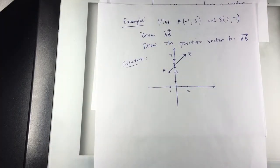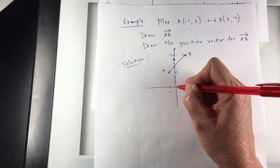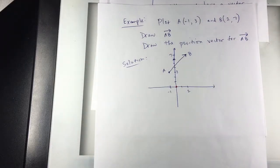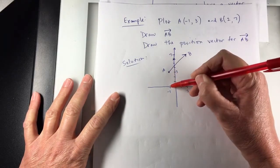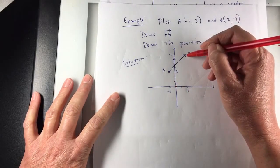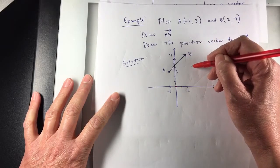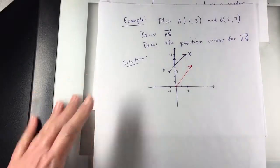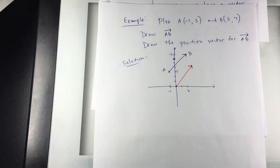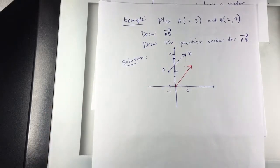I'll put the position vector in red. So the position vector, I need to start at zero, zero. And I guess I could kind of eyeball it a little bit. Let's see, A moved down three units and right one. So B is going to move down three units and right one. Here's my position vector. My picture looks a little off, but I'm not going to worry about that here.